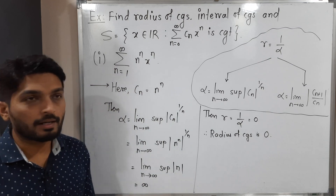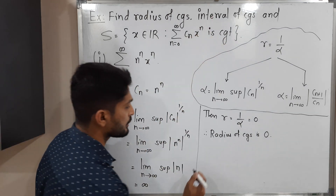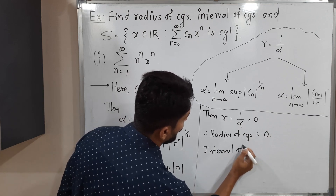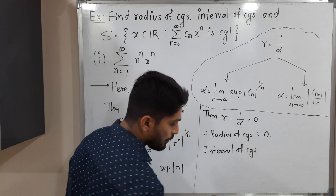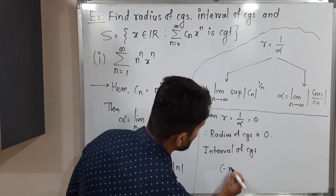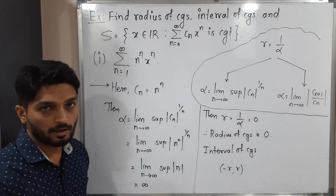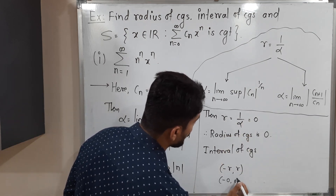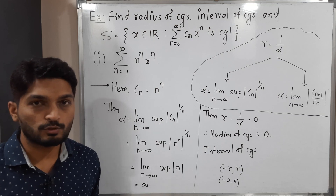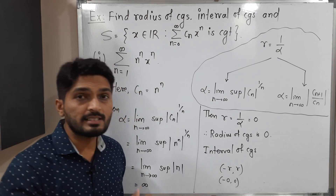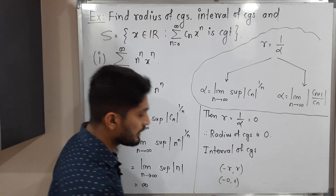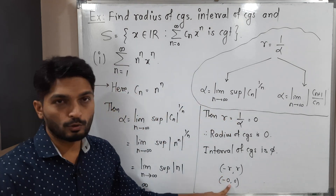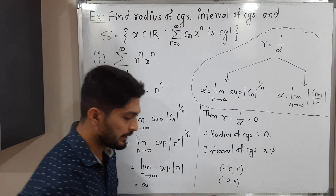After that we find the interval of convergence. The formula is simply (-R, R). But here R is 0, so we get the interval (-0, 0). Since it is an open interval, it does not contain even 0. So the interval of convergence is the empty set — it does not contain 0 either.